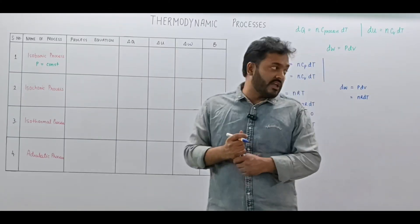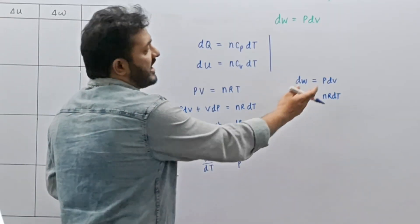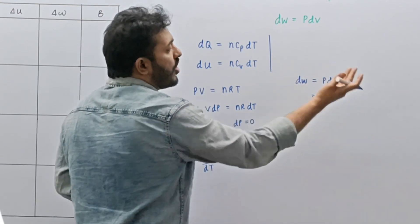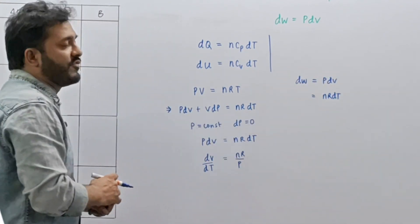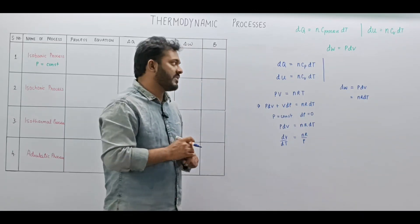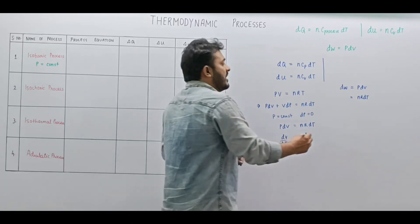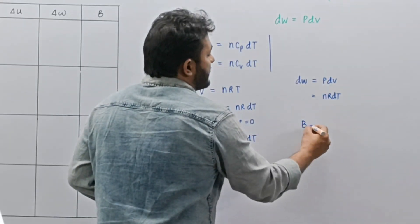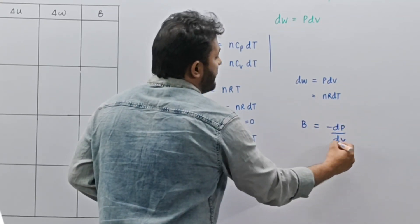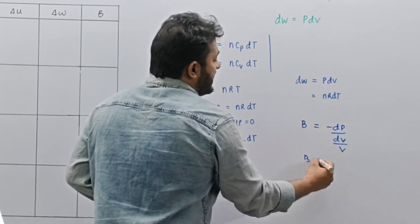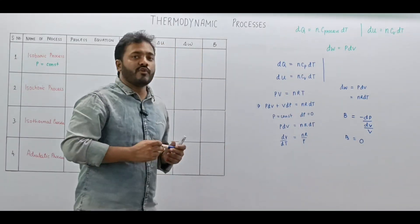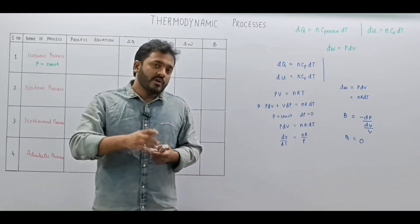To calculate work done, we can use external pressure P times change in volume, or in terms of temperature change as NR(T_final − T_initial). If we talk in terms of bulk modulus, it is defined as minus DP upon (DV/V). Since DP is 0, bulk modulus is 0 for the isobaric process.